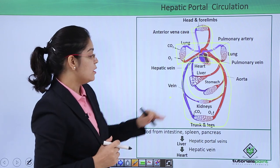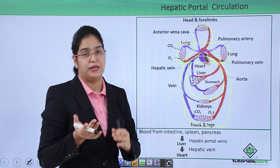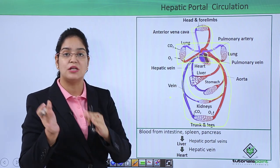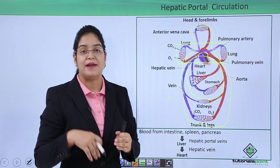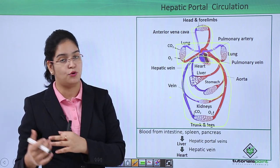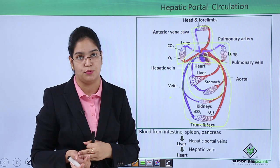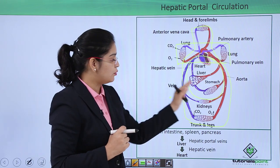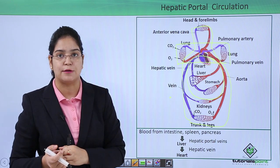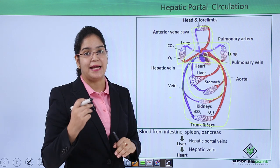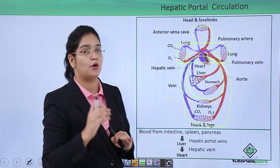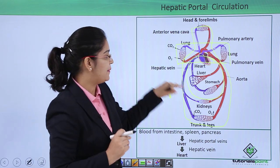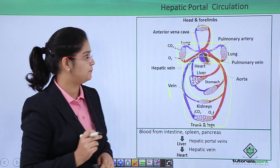Whenever the stomach has excess glucose, this glucose goes to the liver, which converts it into glycogen and stores it. During fasting, when more glucose is needed, this glycogen is converted back into glucose. The liver also produces special proteins and supplies them to the circulation. Blood from the intestine, spleen, and pancreas goes to the liver through the hepatic portal vein, and from the liver to the heart through the hepatic veins.